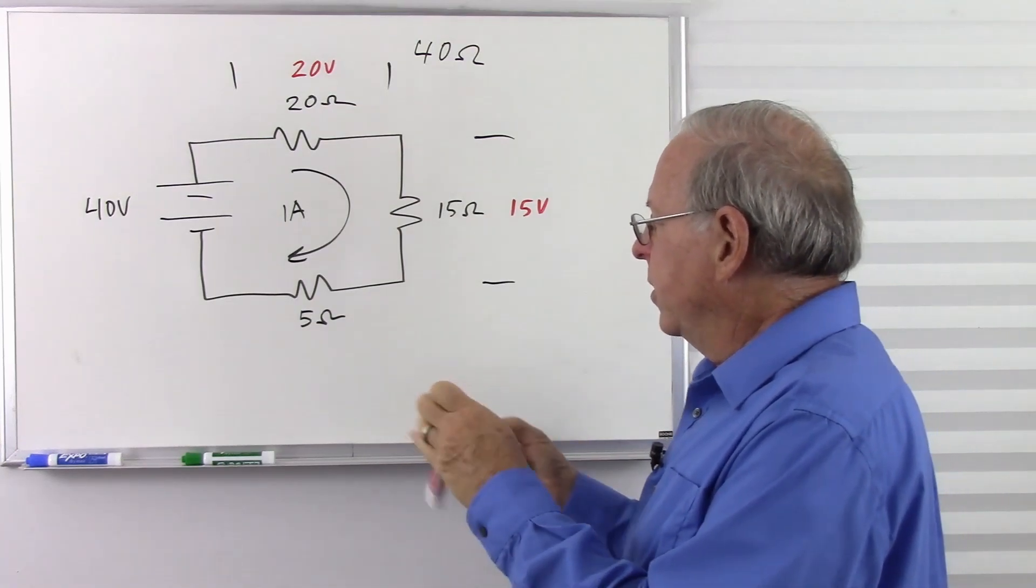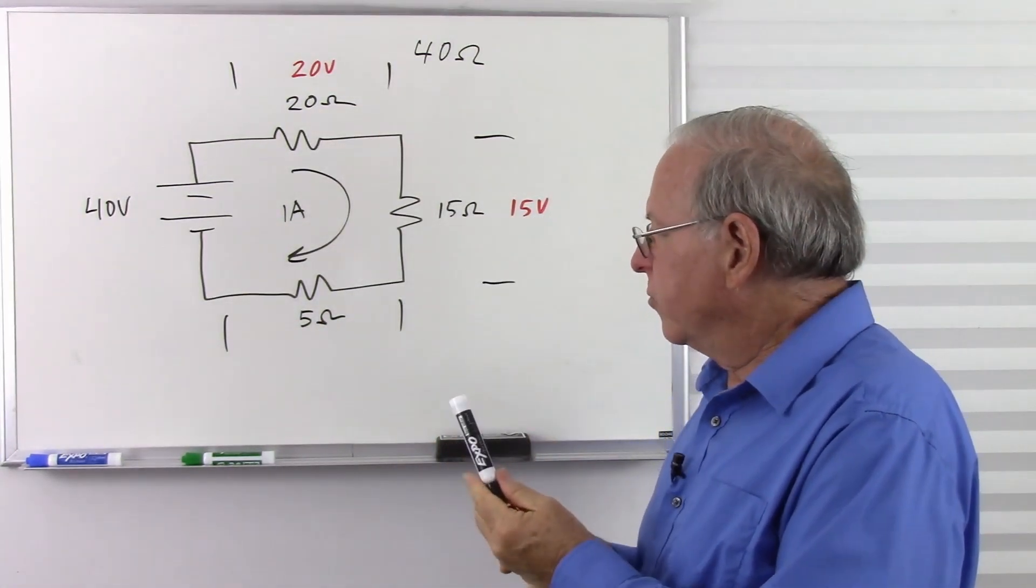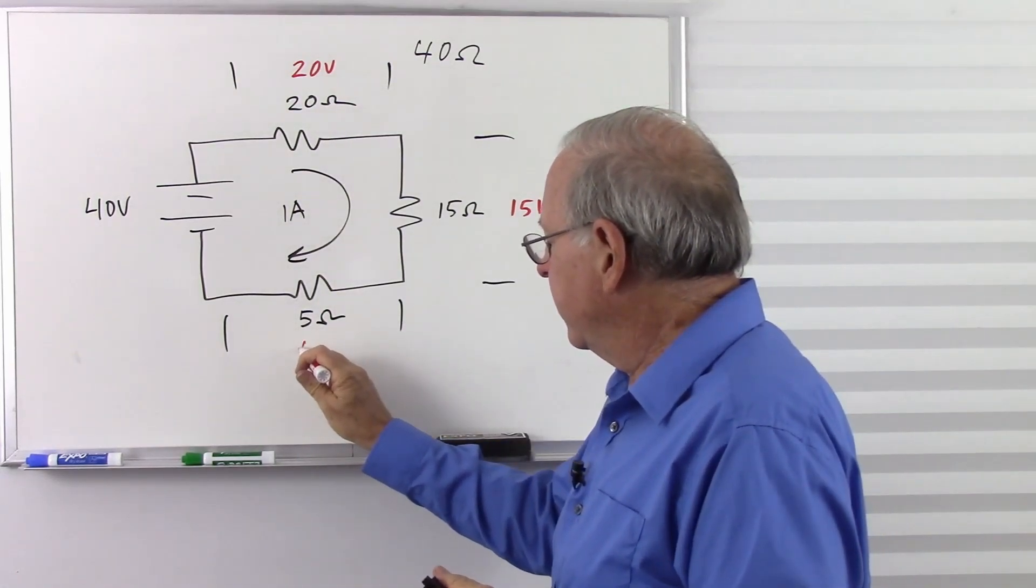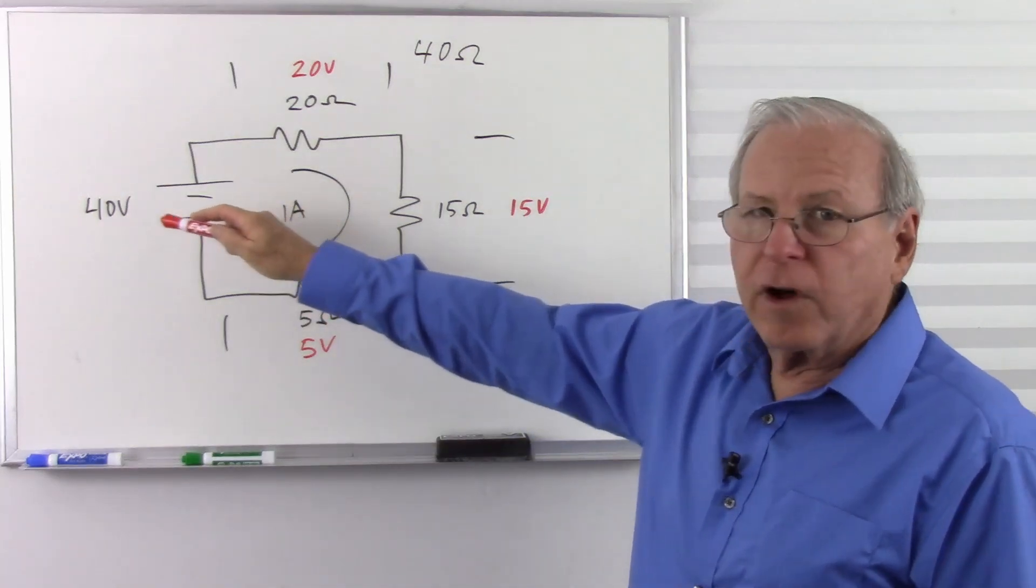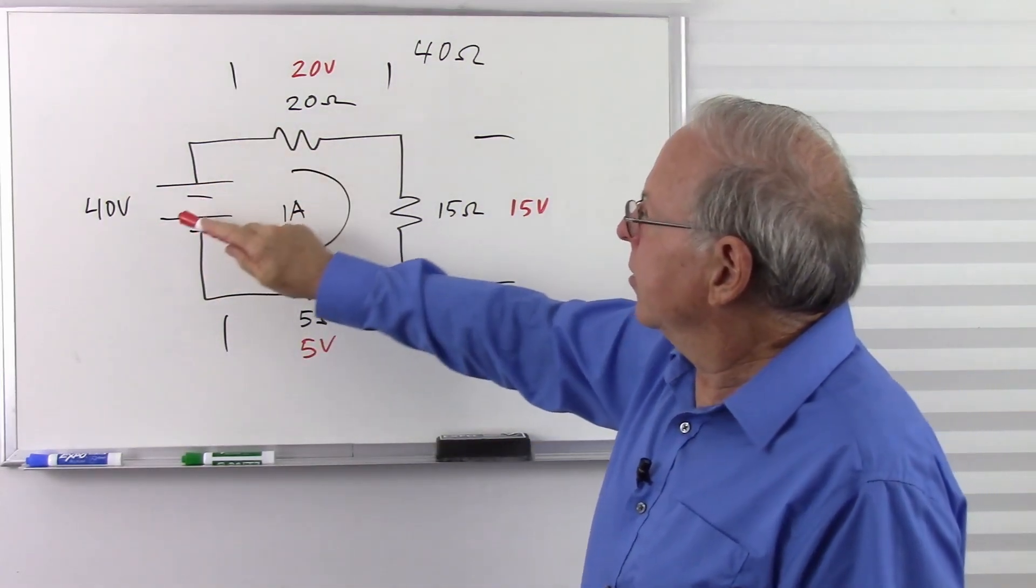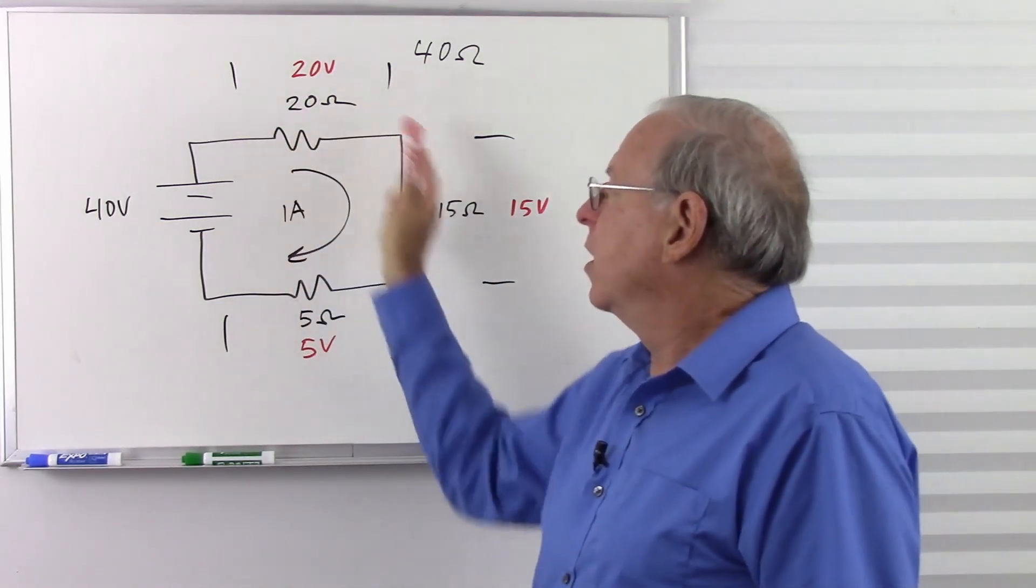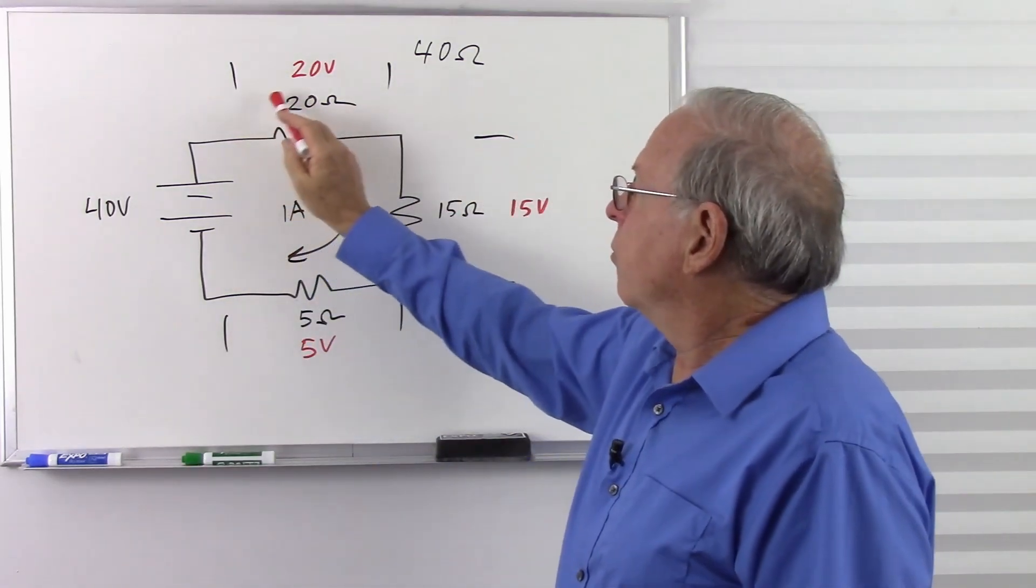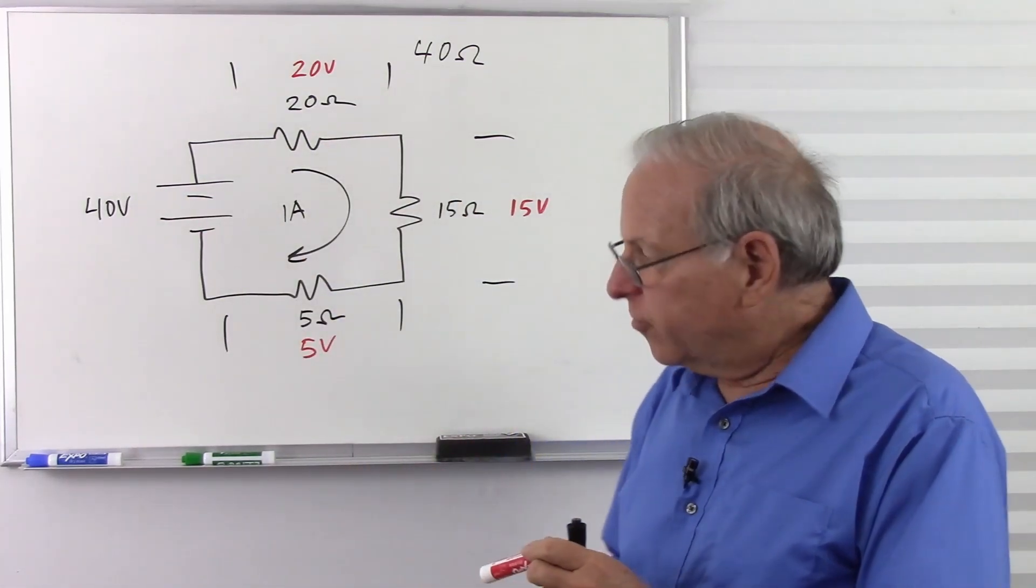That's going to be 15 volts. And last but not least, we have the 5 ohm resistor. 1 amp times 5 ohms is going to give us a total of 5 volts. We can see that this follows Kirchhoff's voltage law, where we start with 40 volts, we lose 20, we lose 15, we lose 5, so we lose all 40 volts around the circuit.